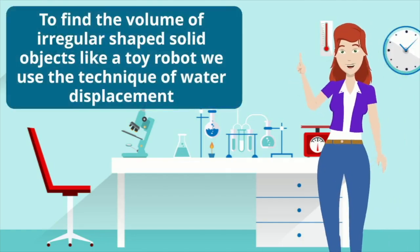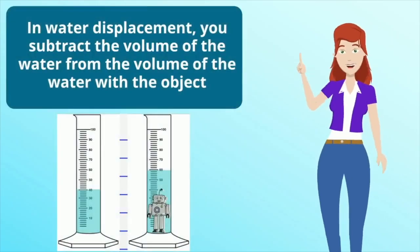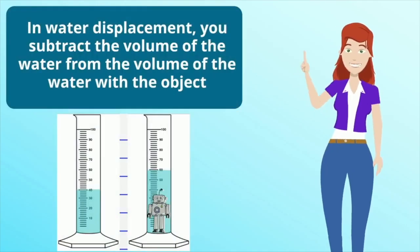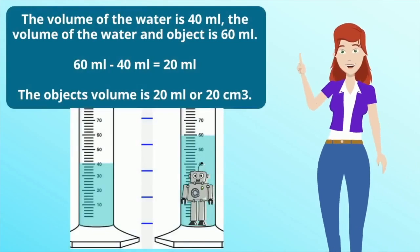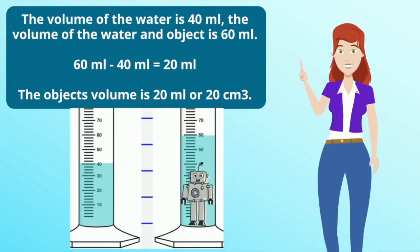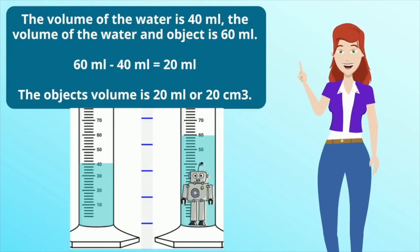To find the volume of irregular-shaped solid objects like a toy robot, we use the technique of water displacement. In water displacement, you subtract the volume of the water from the volume of the water with the object. The volume of the water is 40 milliliters. The volume of the water with the object is 60 milliliters. So 60 minus 40 equals 20 milliliters. The object's volume is 20 milliliters or 20 cm cubed.